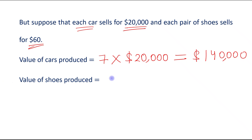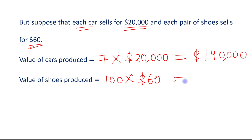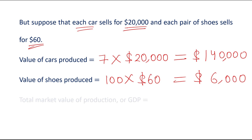Next, value of shoes produced. 100 pairs of shoes were produced, and each pair of shoes sells for $60. So 100 times $60 equals $6,000. Total market value of production, or GDP, is what we now calculate.